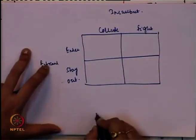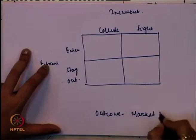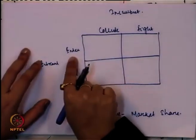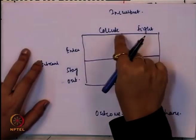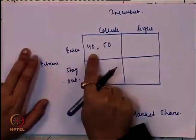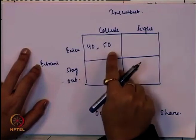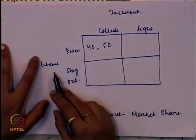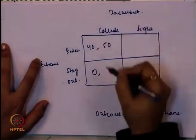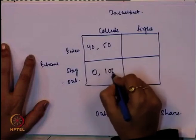The outcome is in terms of market share. Suppose the entrant decides to enter and the incumbent firm colludes. Once the new entrant comes in, the payoff will be 40 and 50 — the market share will be 40 for the entrant and 50 for the monopolist firm. If the entrant decides to stay out, obviously his outcome is 0; he is not going to get any market share. And the incumbent firm is going to get 100.